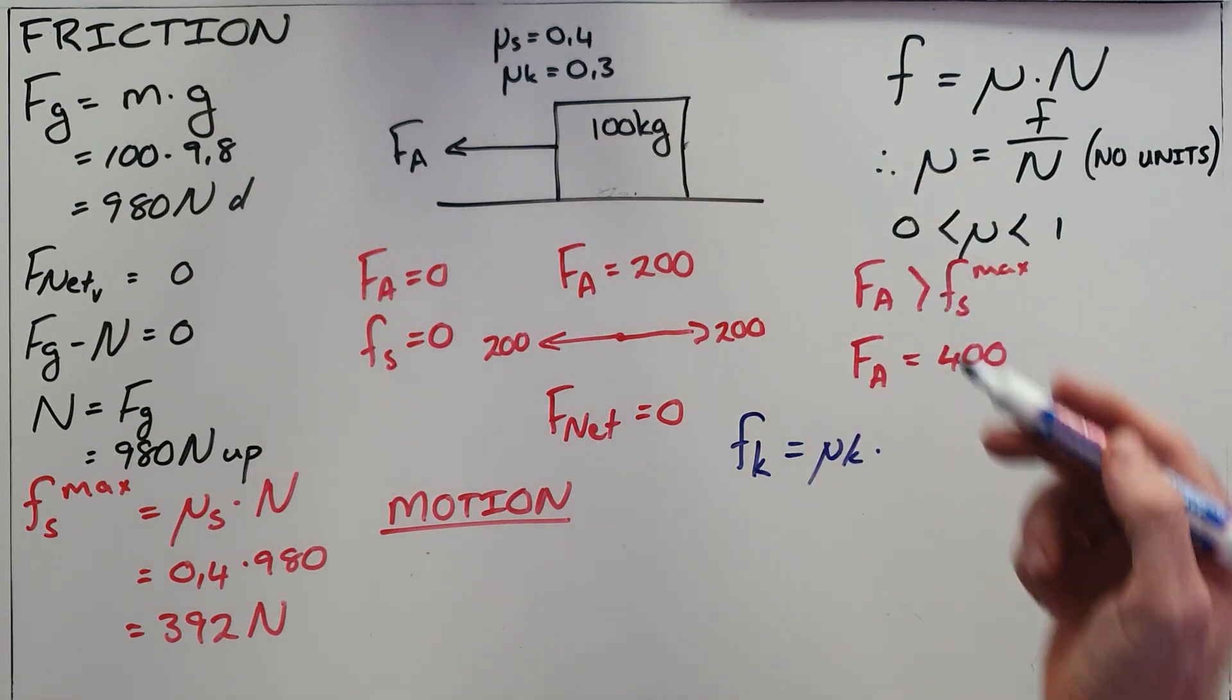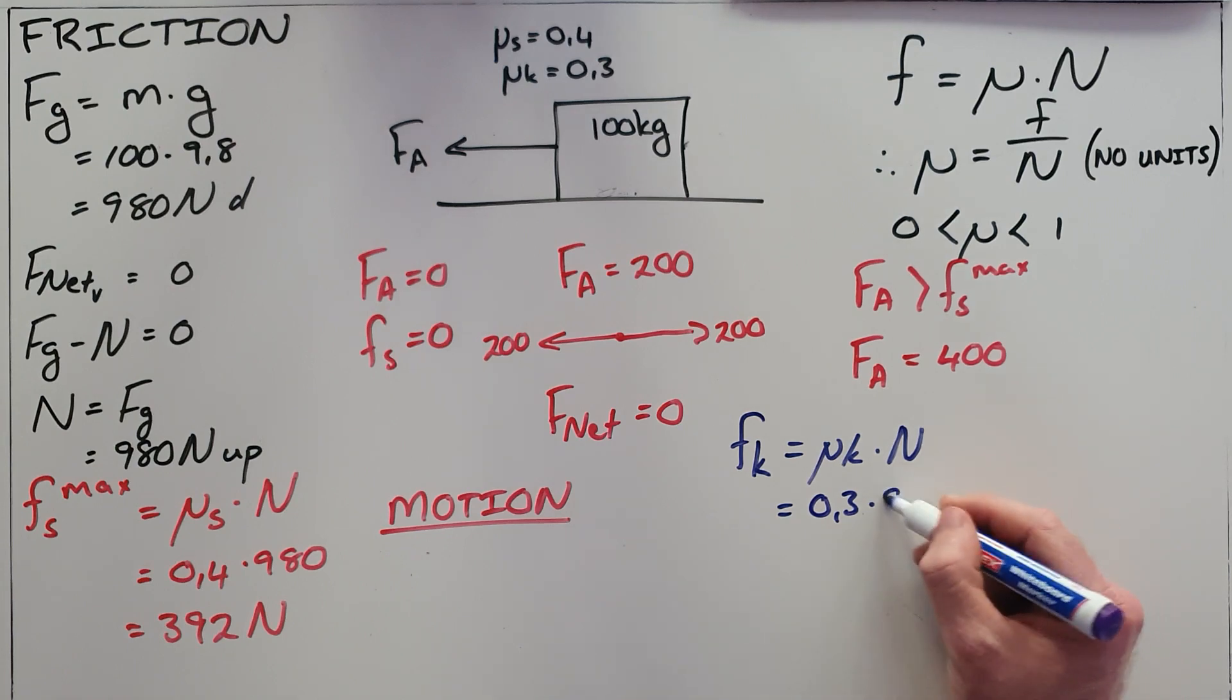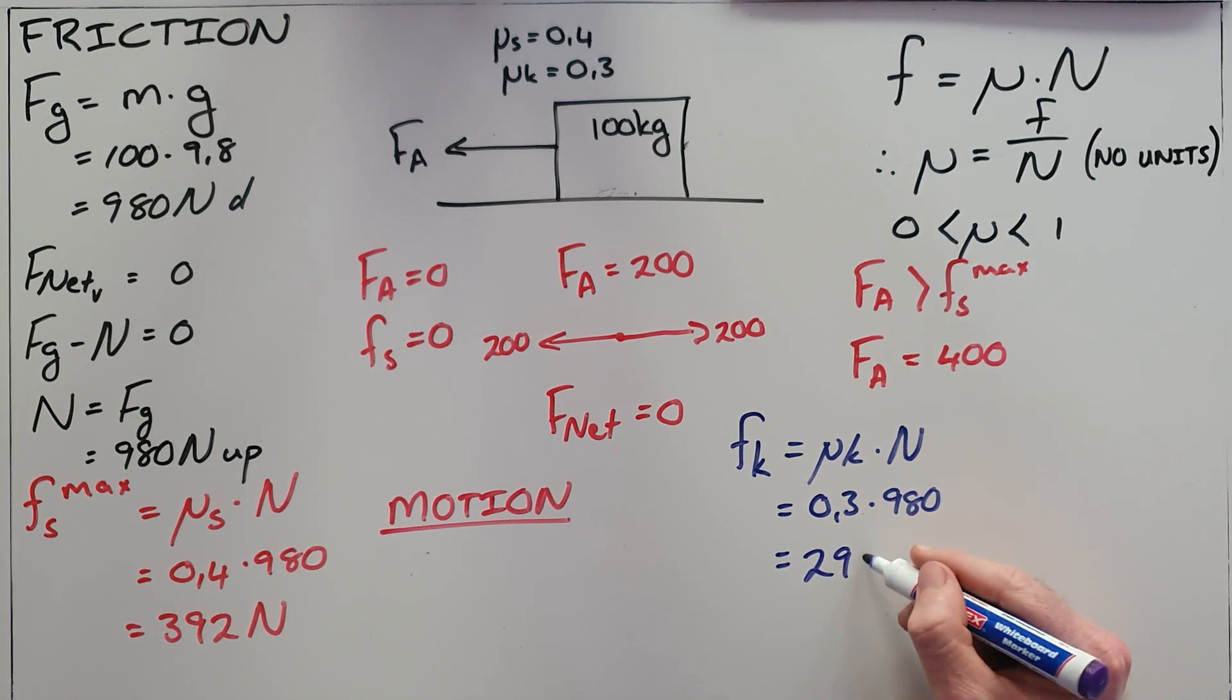The coefficient of kinetic friction is slightly less than that of static friction, which is 0.3 in this case. Multiply by the normal force of 980 to find that the kinetic friction is 294 newtons.